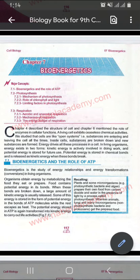First we will see the chapter introduction. The structure of the cell — a living cell exhibits ceaseless chemical activities. A living cell is full of chemical reactions. Cells are like open systems, meaning substances are entering and leaving the cell all the time. This cell is an open system — it allows some substances to enter, and some substances are broken down while new substances are formed.